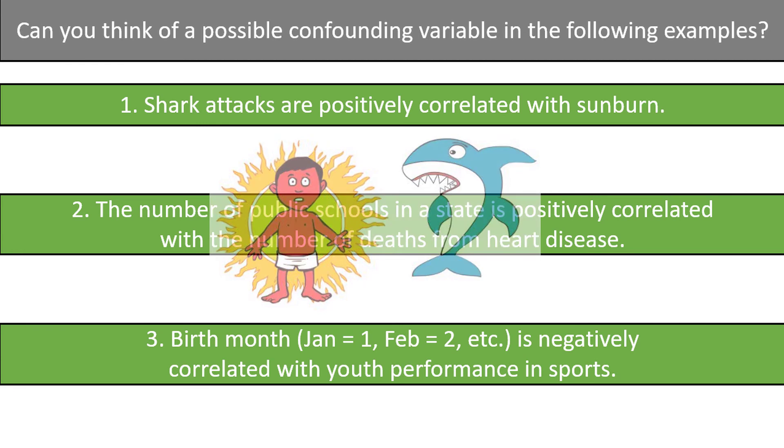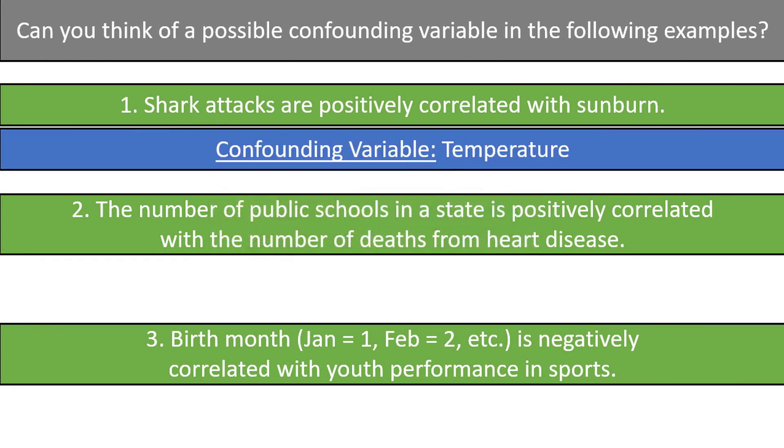There is a third confounding variable of temperature, or perhaps good weather in this case. When the temperature is high, more people are at the beach, swimming, and therefore more likely to get sunburned, and more likely to get attacked by sharks. The confounding variable is temperature, which is associated with both shark attacks and sunburn.